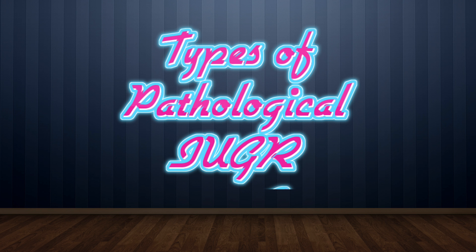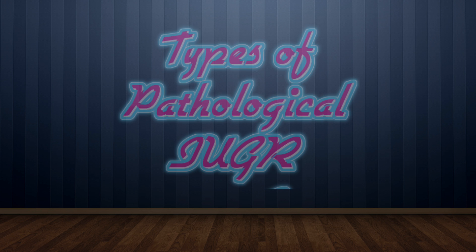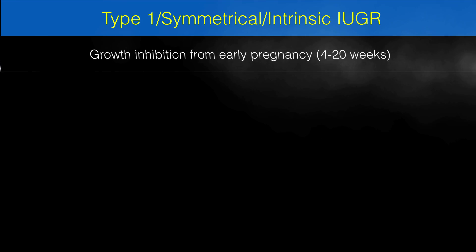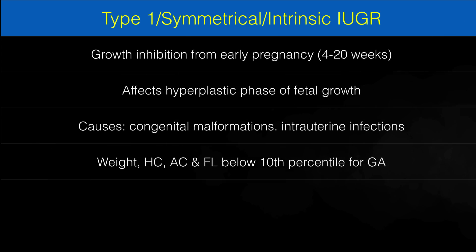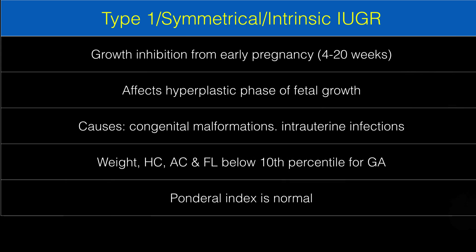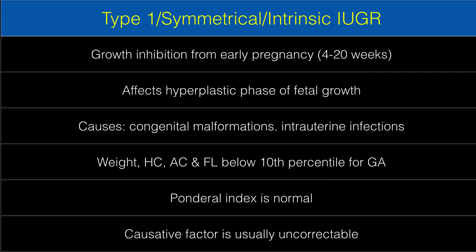Pathological intrauterine growth restriction is of the following types. Type 1, also known as symmetrical or intrinsic IUGR, has these characteristic features: growth inhibition from early pregnancy (4 to 20 weeks), affecting the hyperplastic phase of fetal growth. Causes are congenital malformations and intrauterine infections. Parameters like weight, head circumference, abdominal circumference, and femur length are all below the 10th percentile for gestational age. Ponderal index is normal. The causative factor is usually uncorrectable.